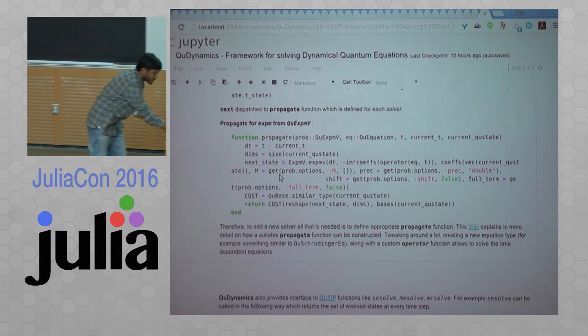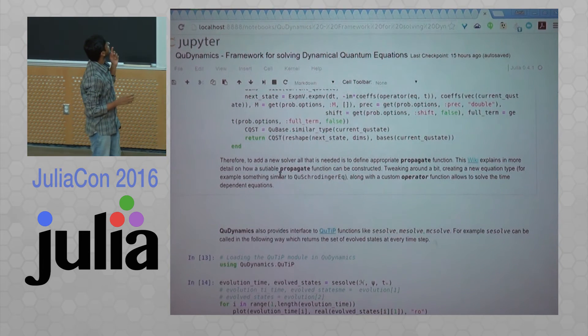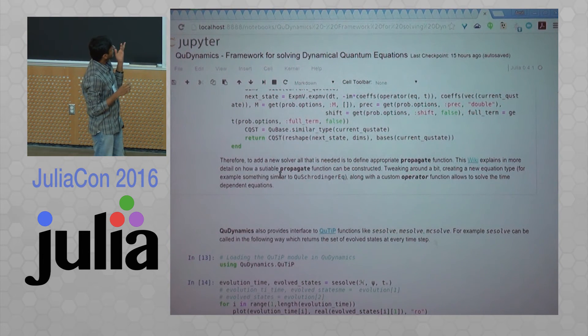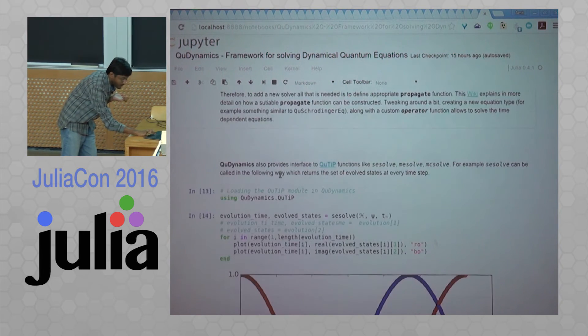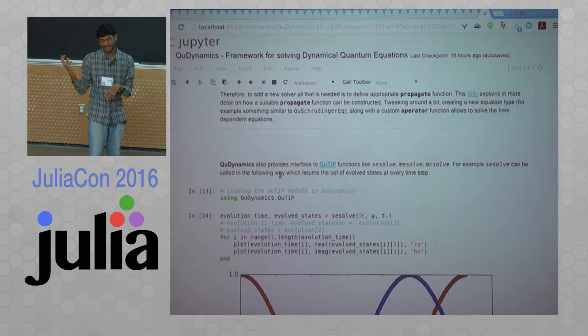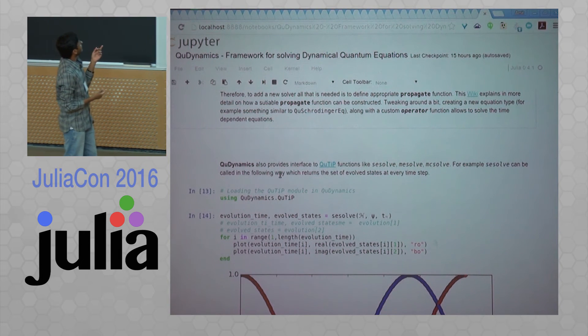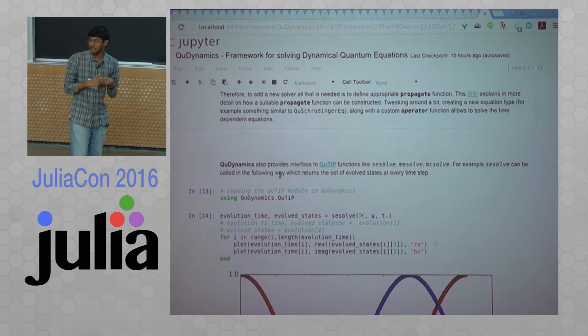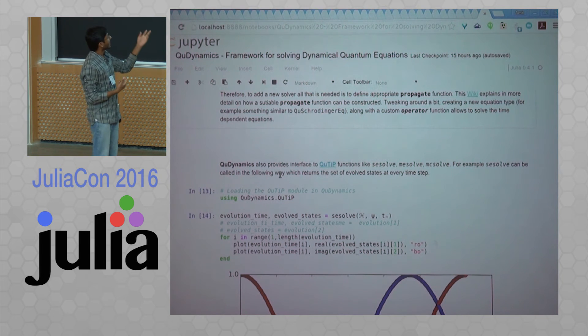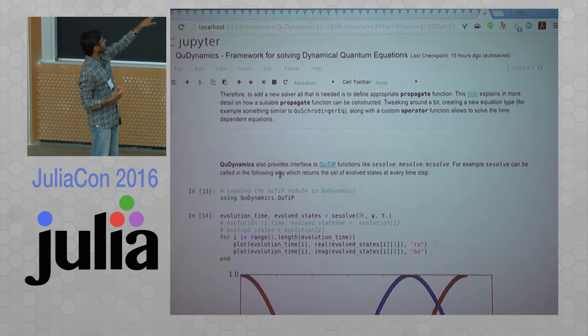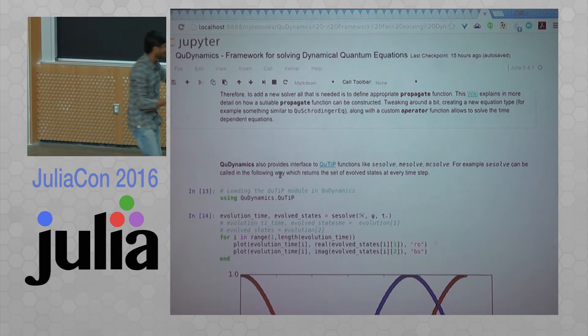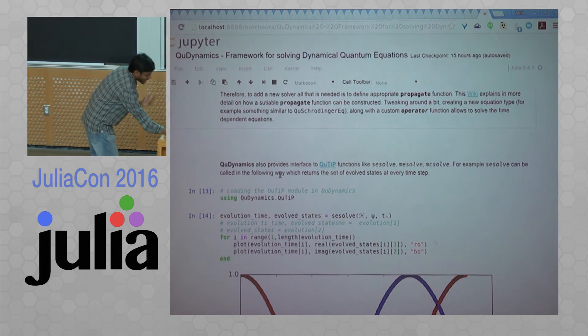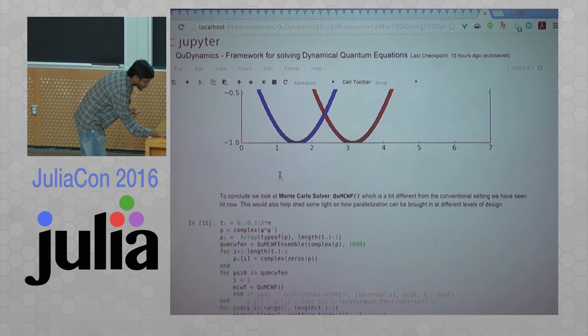And there is a wiki page where you can look into for adding a new solver. And it also—oh, just two minutes more. We also have an interface to QUTIP-like functions. They have sesolve, mesolve, and mcsolve functions. We have a direct interface. We have the function names from their space, but whatever is going on is Qdynamics inside. You could plot the graphs. I am actually out of time.